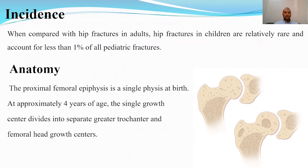Regarding the anatomy, the proximal femoral apophysis is a single nucleus at birth that starts to divide at the age of 4 years into two separate ossification centers — one for the femoral head and the other at the greater trochanter.